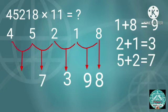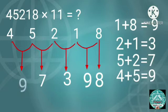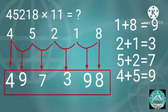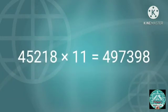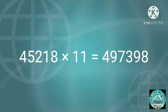Then add 4 and 5. 4 plus 5 equals 9. Write 9 here. Then write the first digit of the number, that is 4, to the left of 9. So the answer is 497,398.